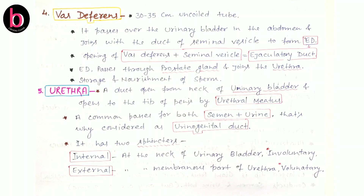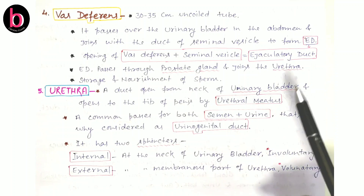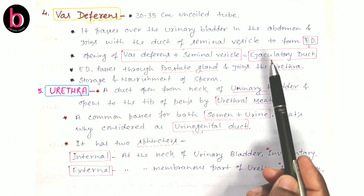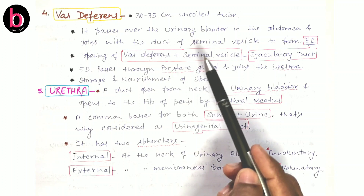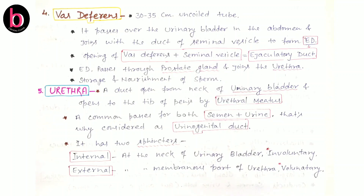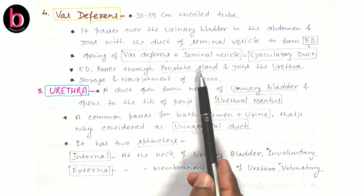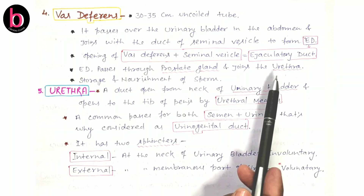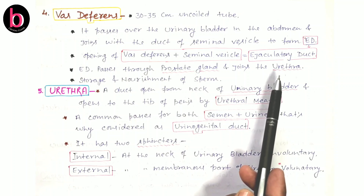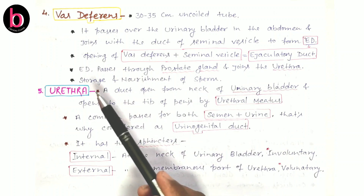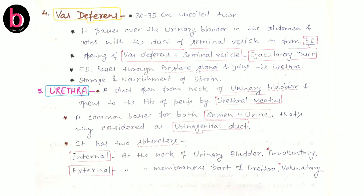As vas deferens moves down, it connects with the duct of the seminal vesicle to form the ejaculatory duct. The ejaculatory duct is formed by the opening of vas deferens plus the opening of seminal vesicles joining together. The ejaculatory duct then passes through the prostate gland and joins the urethra. The function of vas deferens is storage and nutrition of sperm, similar to the epididymis, though sperm are not stored here for 18 to 24 hours.